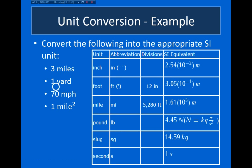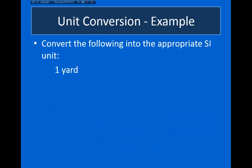Moving on to the next example, we're asked to convert 1 yard into SI units. A yard is a unit of length, so we need to convert into meters. 1 yard is equal to 3 feet, and 1 foot is equal to 3.05 times 10 to the minus 1 meters. This time I'll have to use two conversion factors — first converting 1 yard into feet, and then converting that into meters using the feet-to-meter conversion factor.